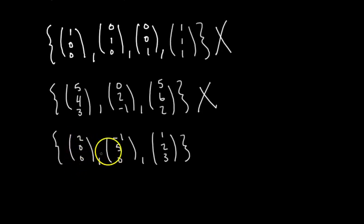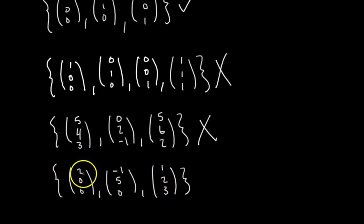All right. This last one, you have (2,0,0), (-1,5,0), and (1,2,3). So first question, do these three vectors span R3? Yeah, they do. I mean, if you put these three vectors into a matrix, you've got three pivots. And so the span of the three is going to be R3.